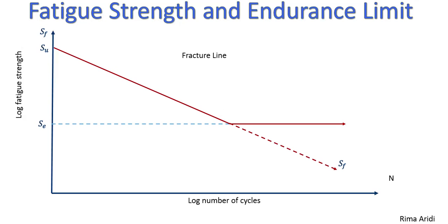This curve here represents fatigue strength and endurance limit. Su is the ultimate strength of the material. Sf is the fatigue strength. Now fatigue strength Sf decreases steadily on log scale with increased number of cycles until reaching a plateau about 10 power 6 cycles.